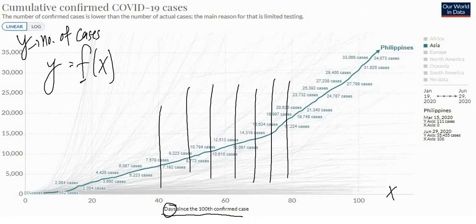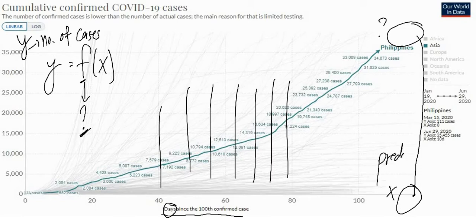So if we would know what this function would be, then we can predict if this number of days here would be at what specific number of cases already. If we will be able to know that relationship, then we can predict what might happen next.